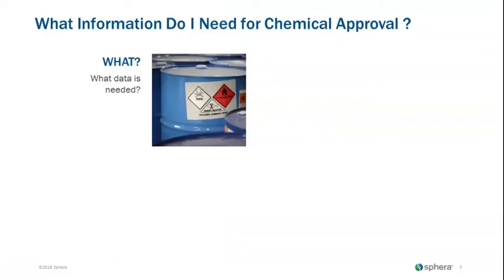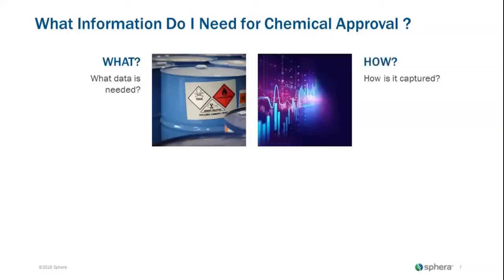To do a chemical approval, what you need in the beginning is data. Data is your key — that's your driver. Most of us leverage data from the SDS, but there are other data sources to consider. Data is your key when it comes to your chemical approval.